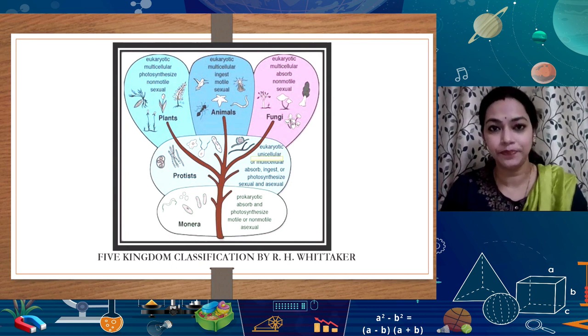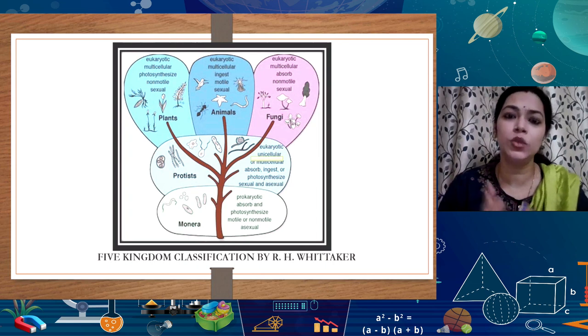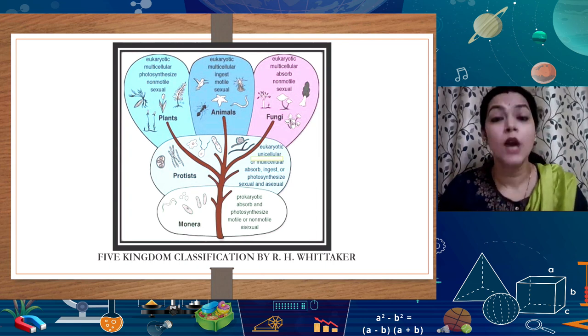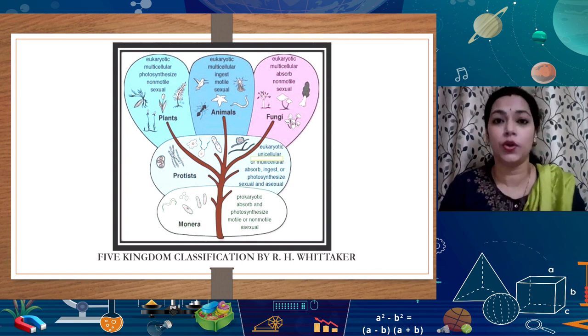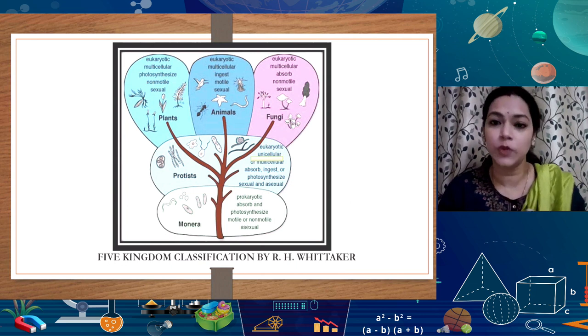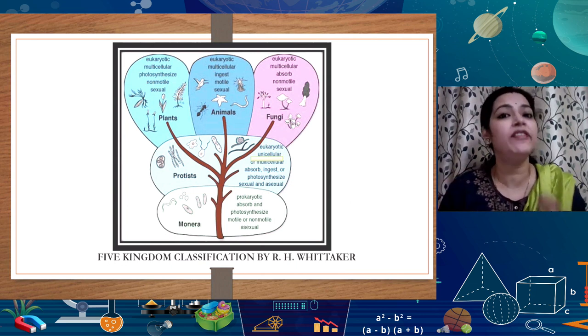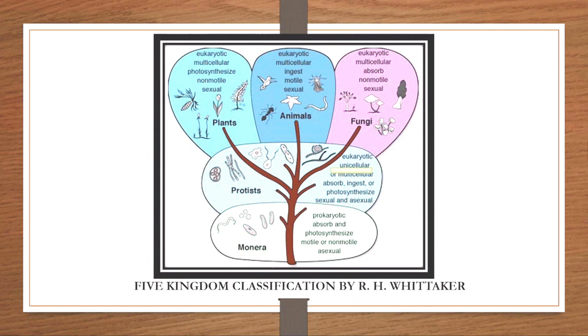After Monera, the next kingdom is Protista. One similarity with Monera is that Protista are also unicellular in nature, but their cell design is eukaryotic, not prokaryotic. From Protista onwards — Protista, Fungi, Animalia, Plantae — all have eukaryotic cells. Only Monera has prokaryotic cells. There is a clear and drastic difference between prokaryotic and eukaryotic cell design, functioning, and every other aspect.